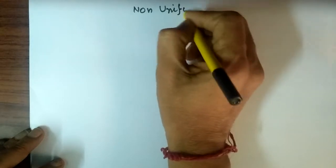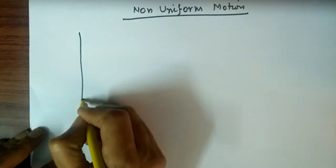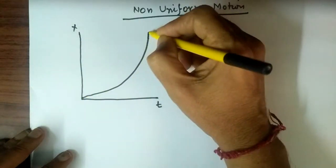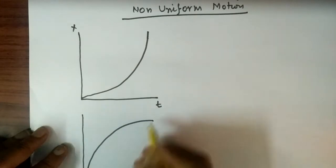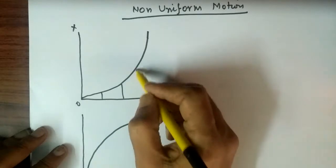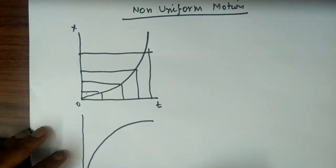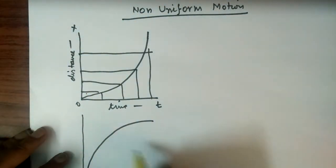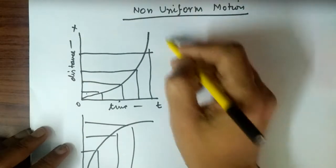Now we take non-uniform motion. The XT graph — the distance-time graph — will show that in a fixed interval of time, the distances covered are different. This is an example of non-uniform motion.